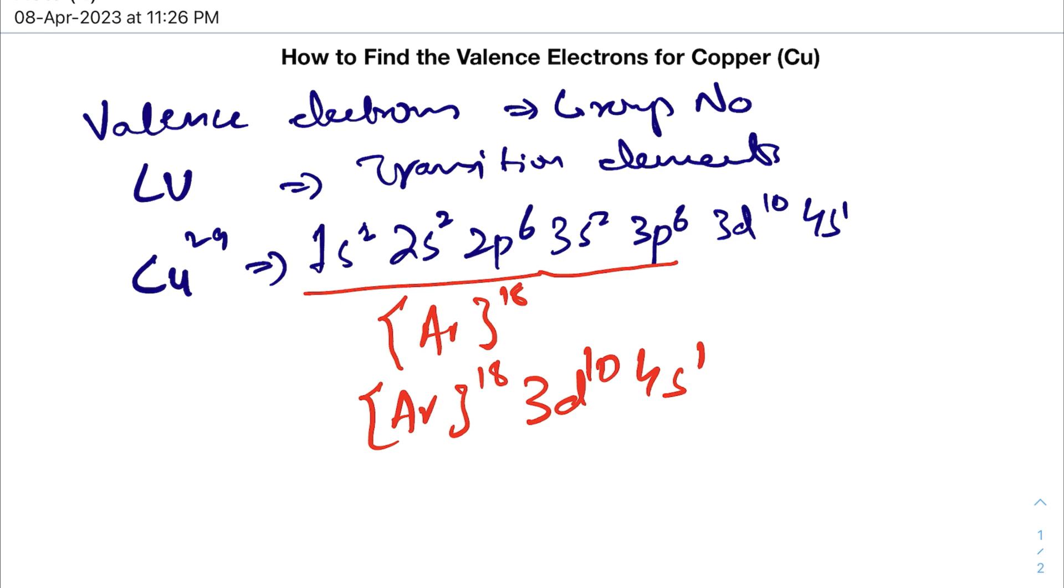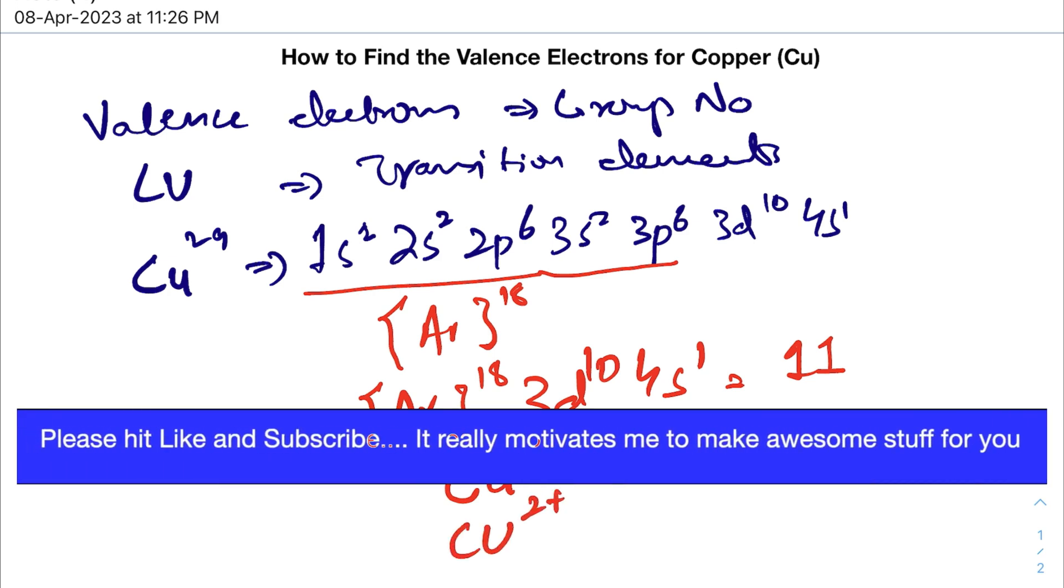And here the valence electrons are 11 in number, but generally copper only forms in two forms which is Cu+ and Cu2+, which means that it only loses one electron or two electrons when it forms the chemical bond.